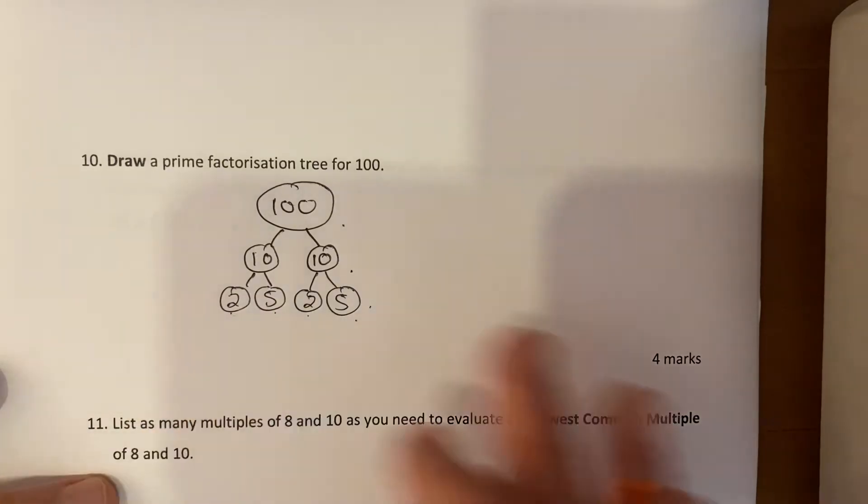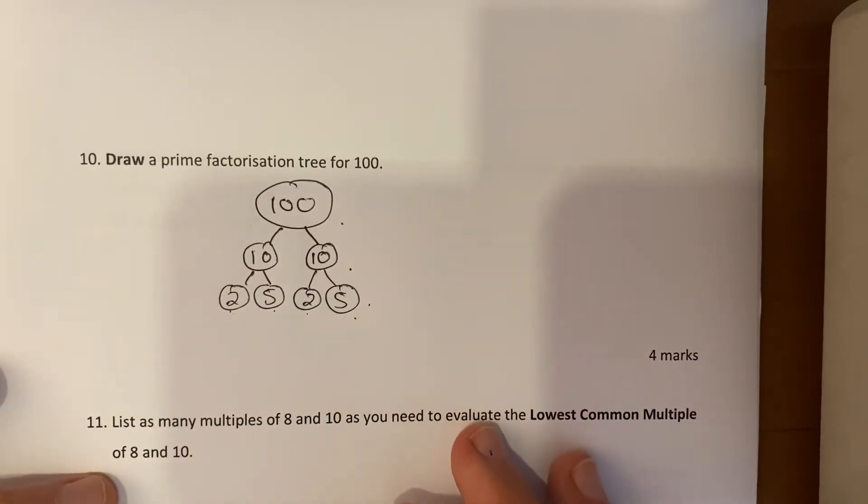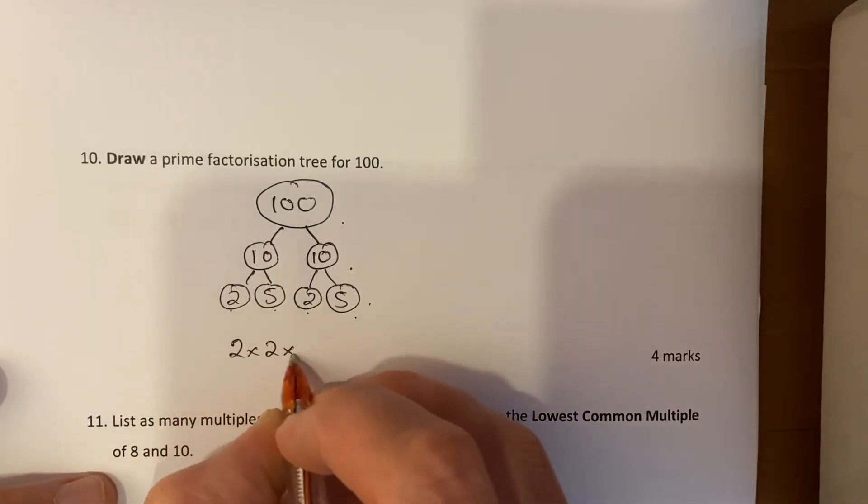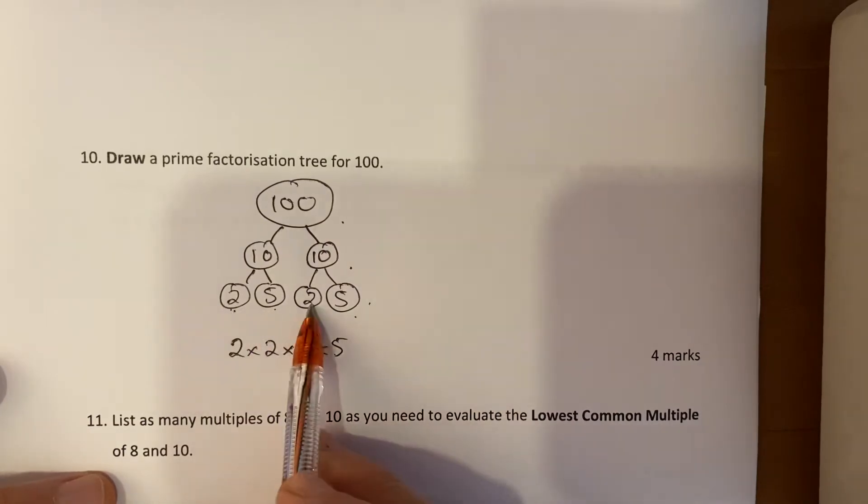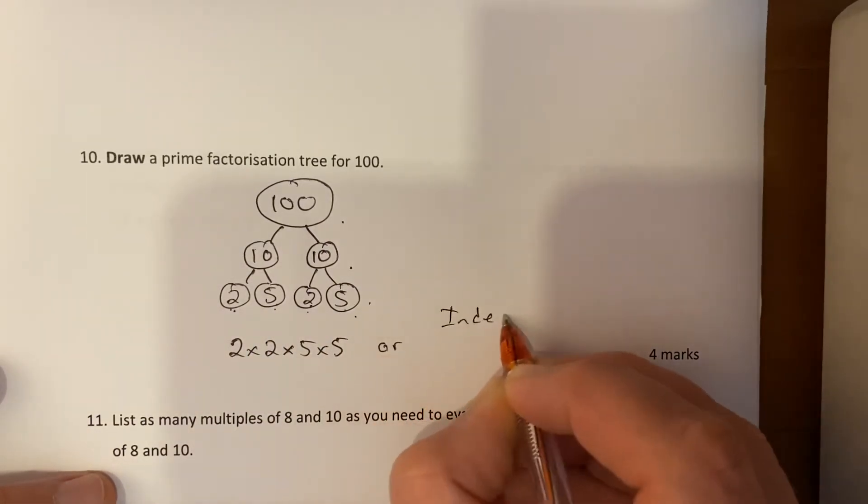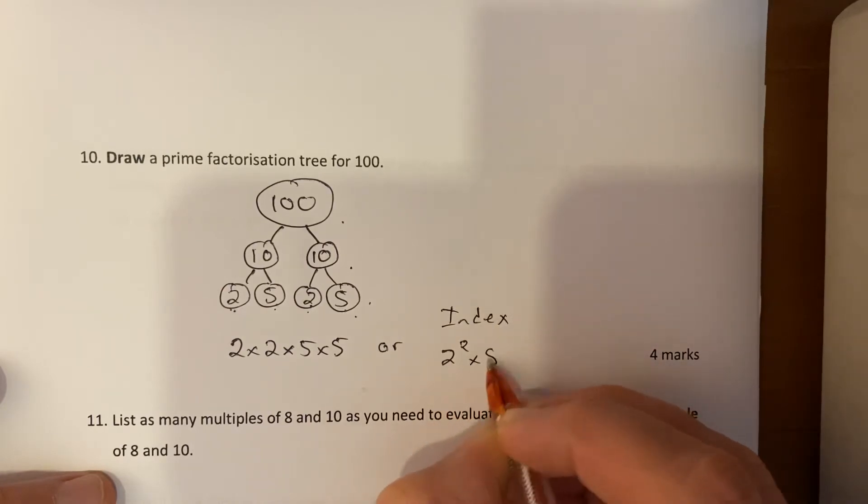And then we can write it: 2 times 2 times 5 times 5 in numerical order, or we can write it in index form: 2 to the power 2 multiplied by 5 to the power 2.